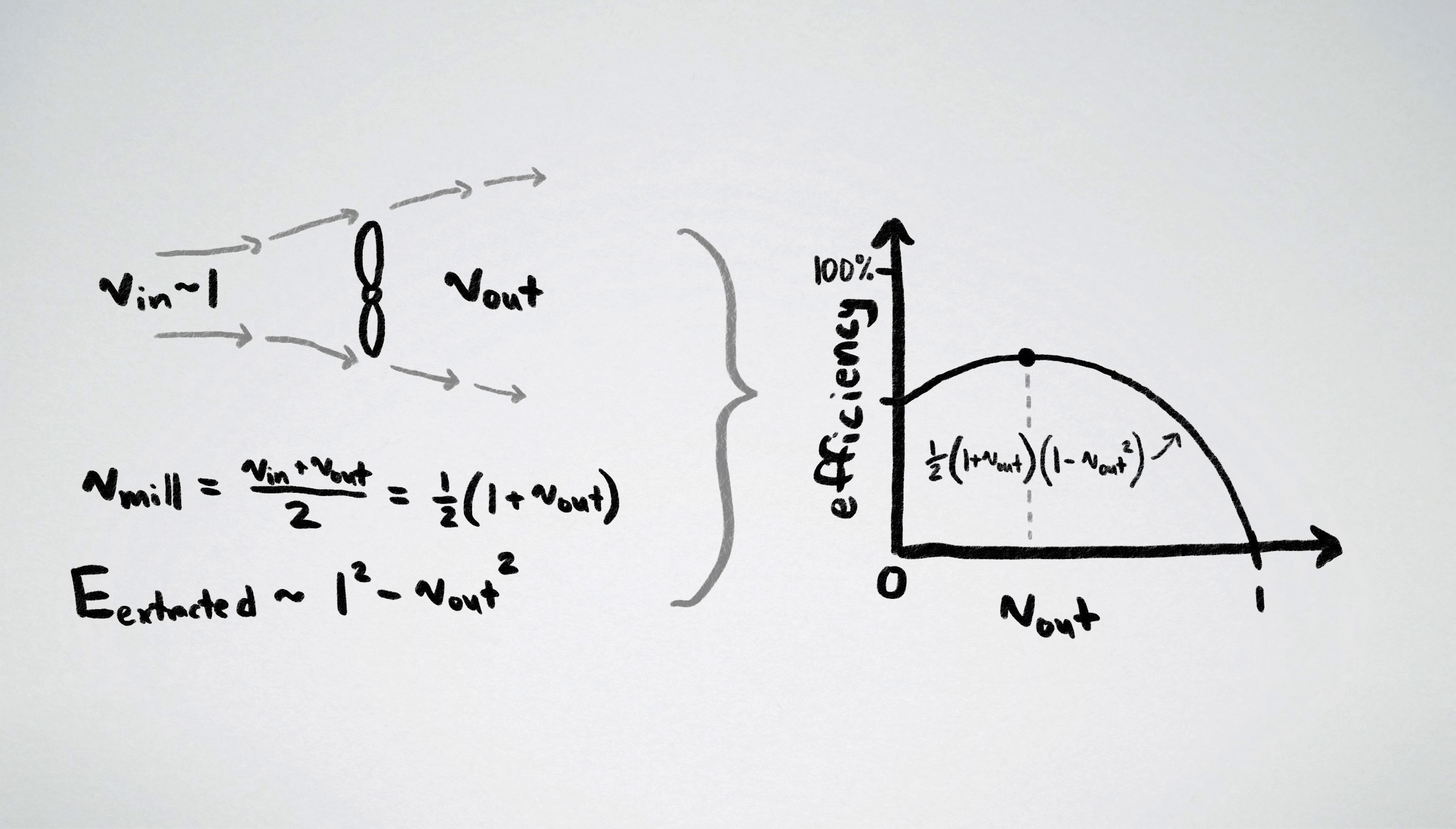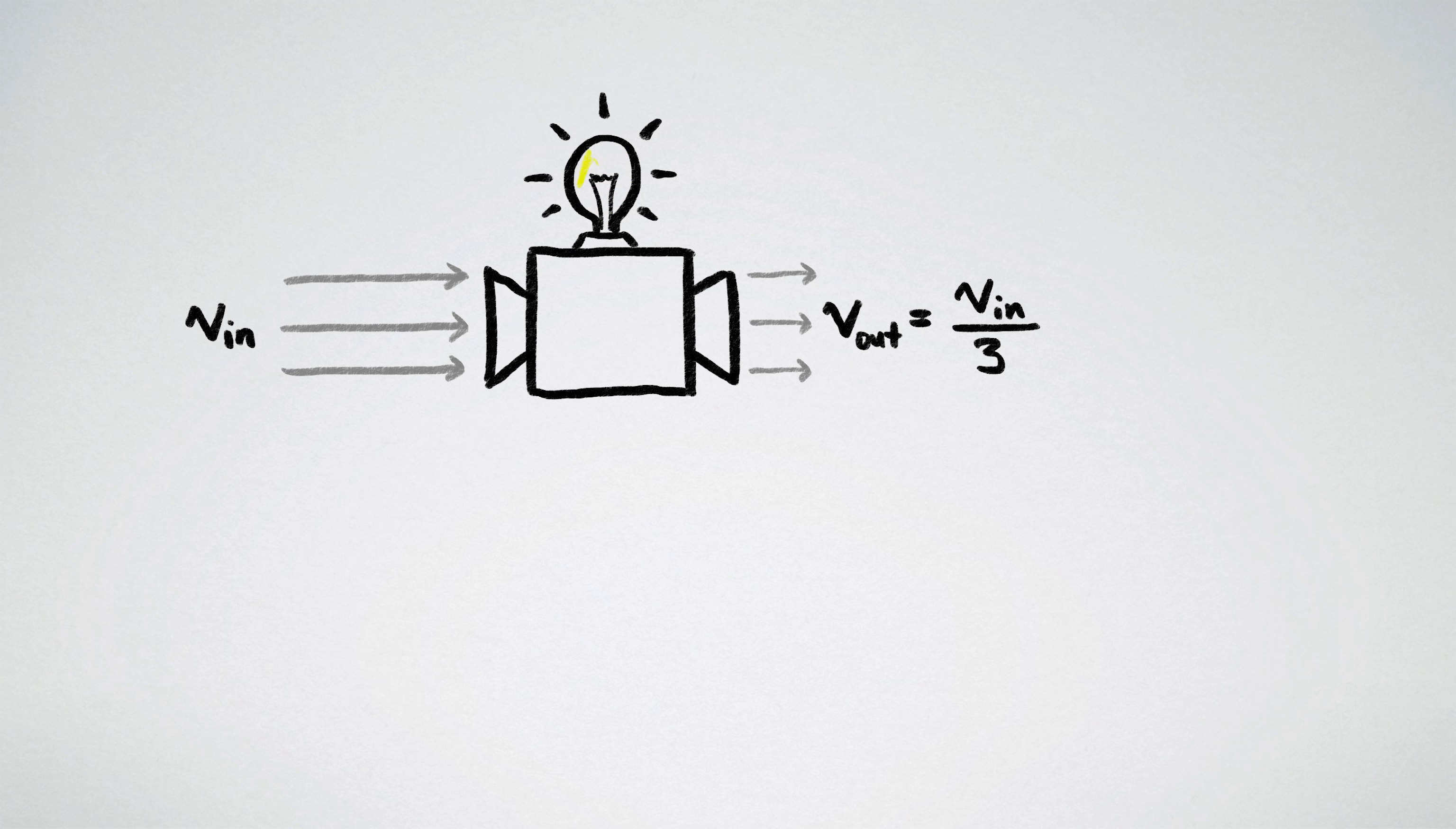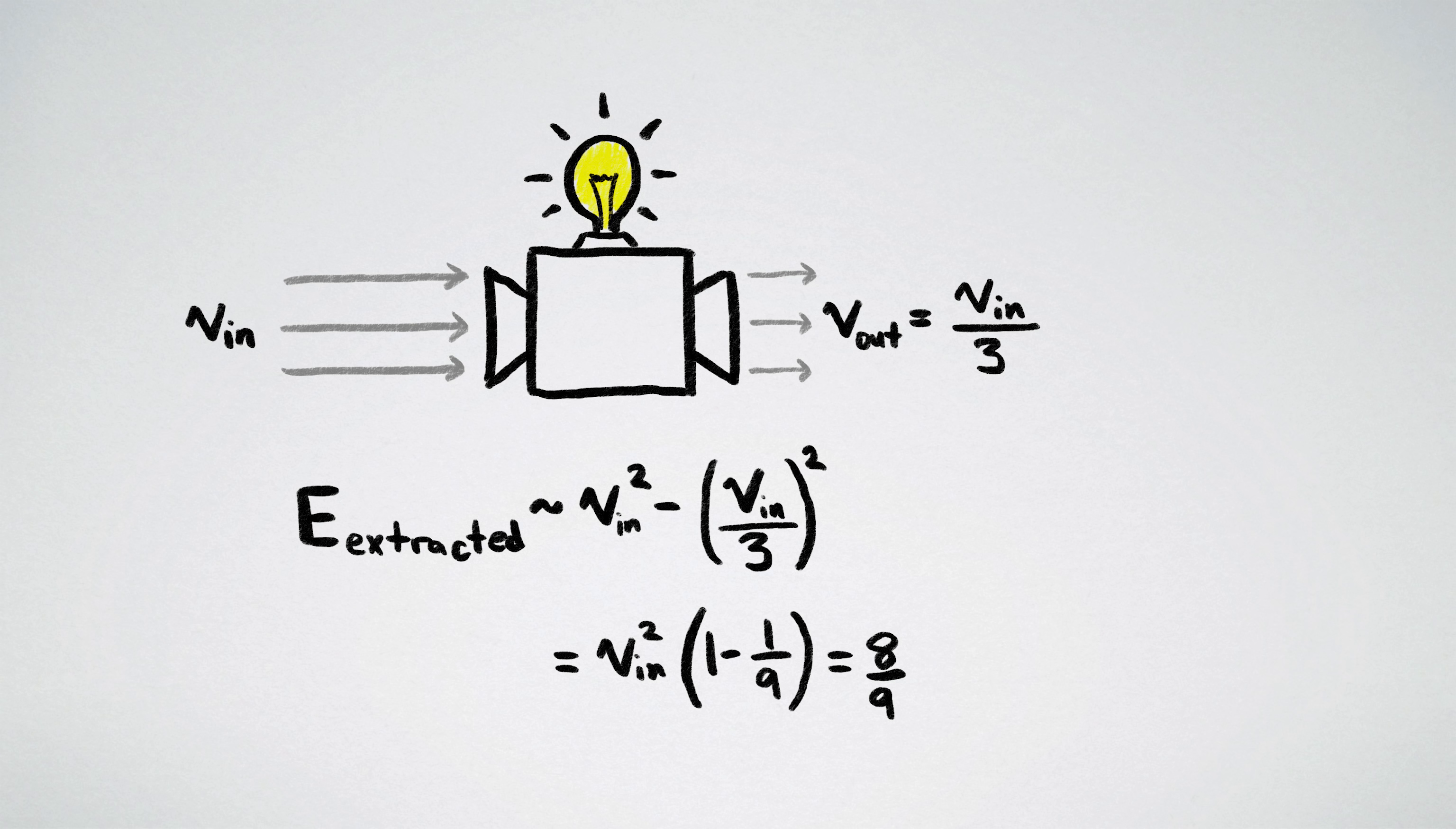you find that the most efficient windmill possible slows the wind to a third of its incoming speed. Reducing to one-third speed achieves a kinetic energy efficiency of v² minus (v/3)², or 88.88% of the energy of the wind being extracted.